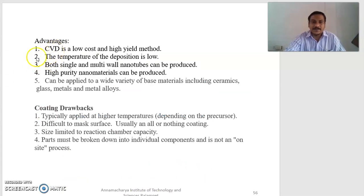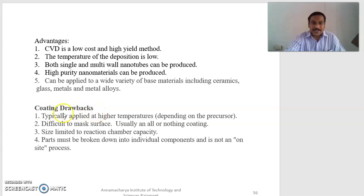Advantages of CVD: first, chemical vapor deposition is a low-cost and high-yield method; second, the temperature of the deposition is low; third, both single and multi-wall nanotubes can be produced; fourth, high-purity nanomaterials can be produced; fifth, it can be applied to a wide variety of base materials including ceramics, glass, metals, and metal alloys. Coating drawbacks: first, typically applied at high temperatures depending on the precursor; second, difficult to mask surface — essentially an all-or-nothing coating; third, size is limited to reaction chamber capacity; fourth, parts must be broken down into individual components.